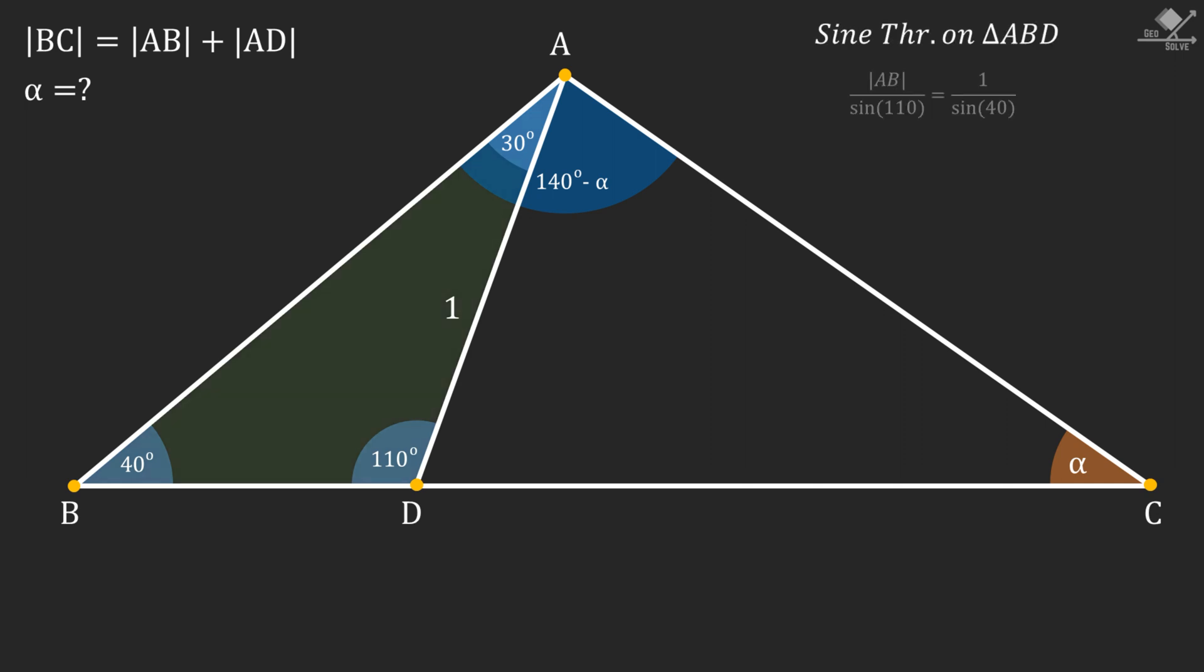From here, we will have AB over sine 110 will be equal to 1 over sine 40. And rearranging the terms, AB will be equal to sine 110 over sine 40.